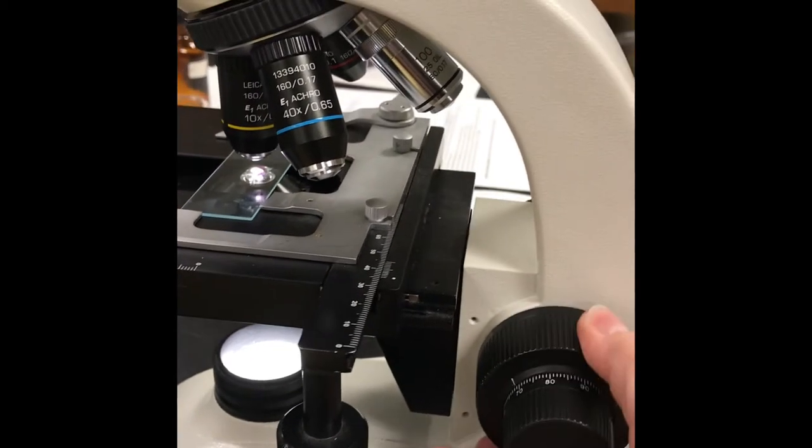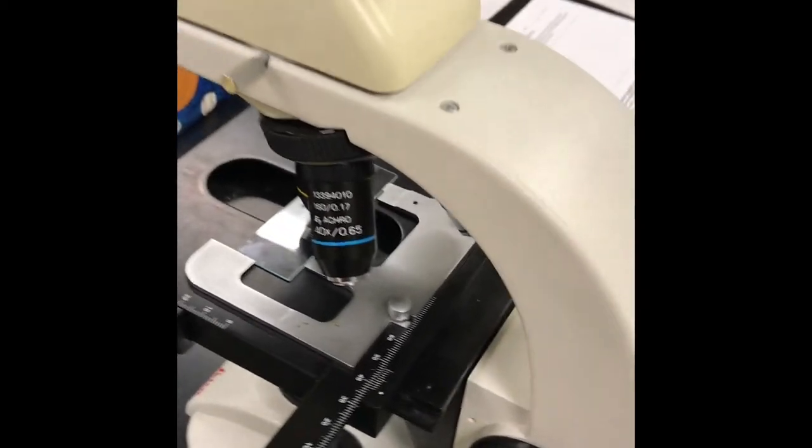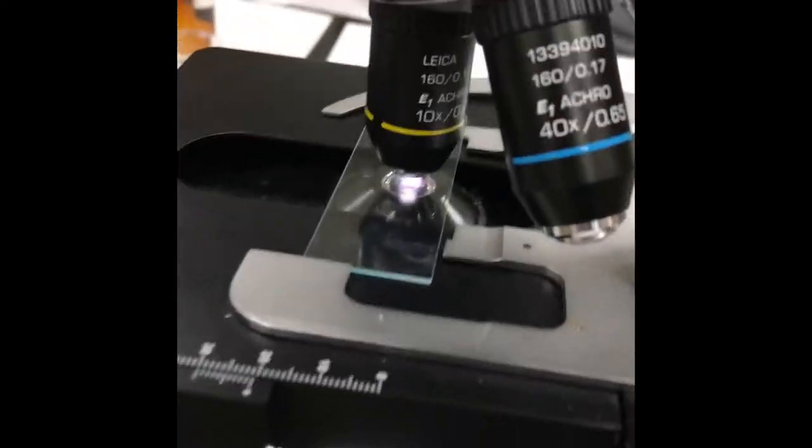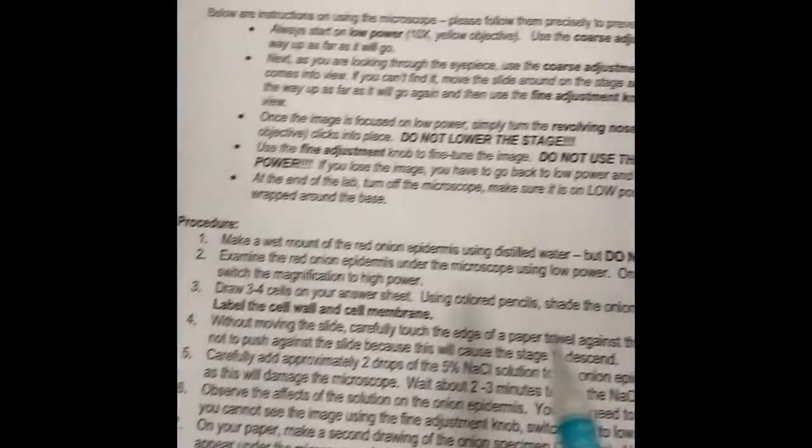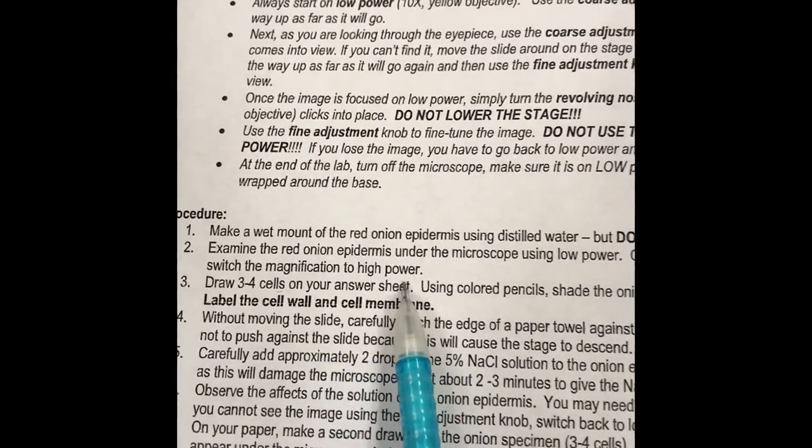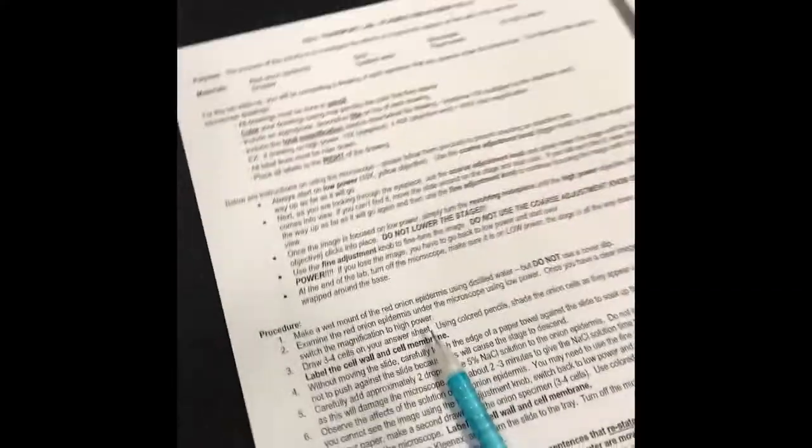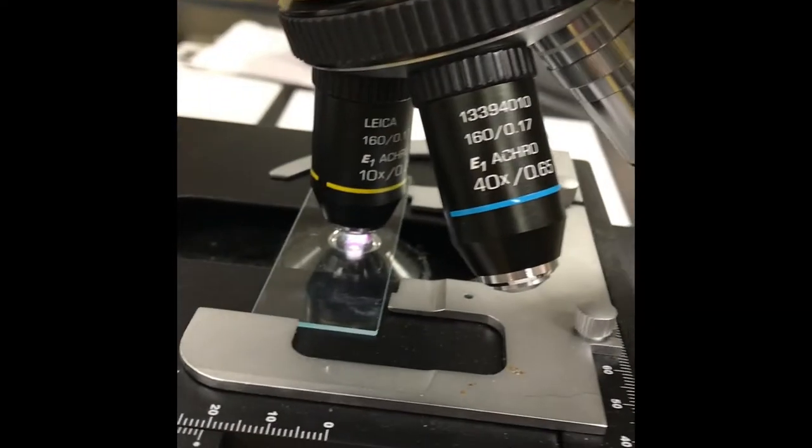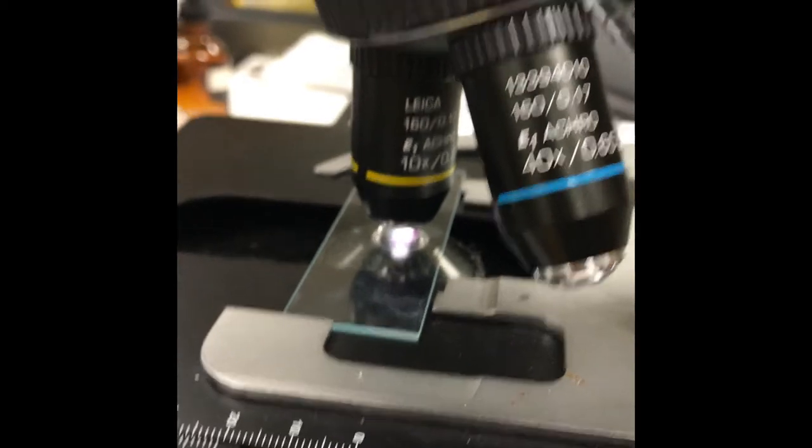I have it focused on 10x now. I know the directions say to switch to high power, but we're not going to do that because we're not using a cover slip. I want you to make your drawings on low power, so your total magnification is going to be 100x, not 400x. We have it on the 10x objective times the 10x eyepiece, which equals 100x.